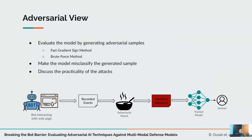Additionally, we go over the adversarial side of the paper, where we try to apply different adversarial techniques like FGSM and brute force to manipulate the model into misclassifying the modified sequence. Specifically, we record a sequence of events from bots, then we run our adversarial attacks to generate a modified sequence which is misclassified as human by the model. Finally, we discuss the practicality of the attacks and how they can be applied in the real world.